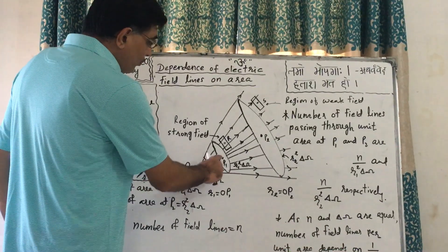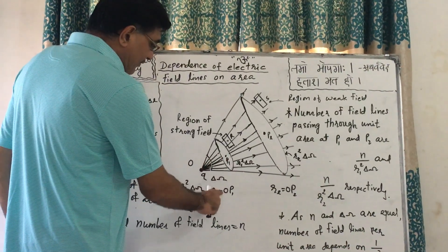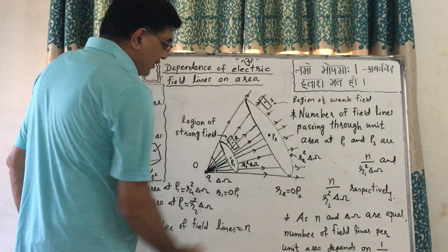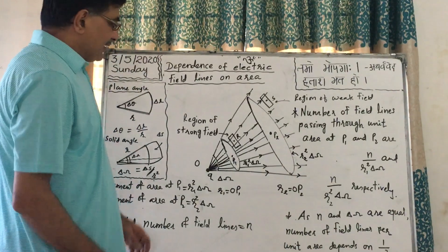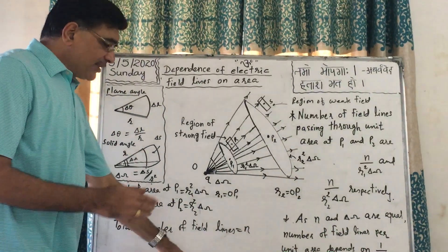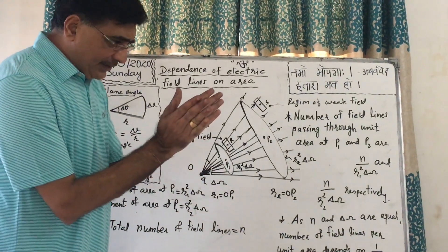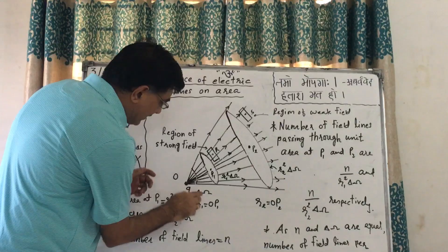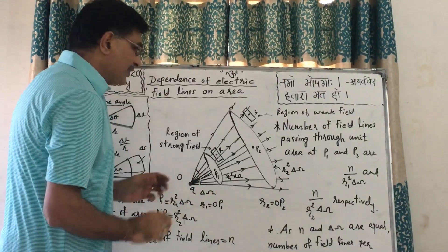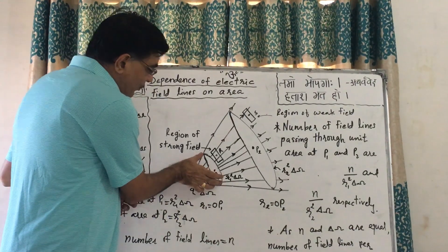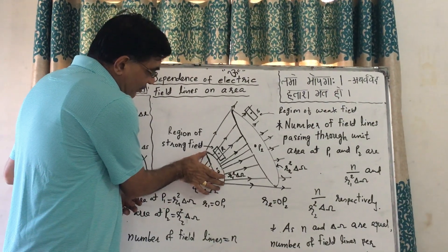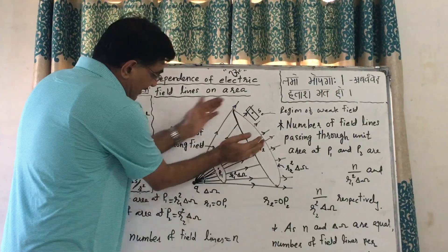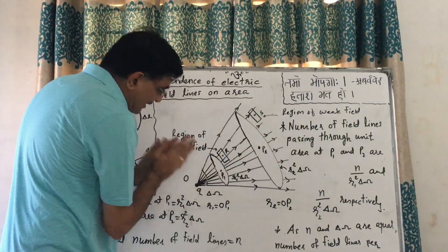The distance from O to P1 is R1 and from O to P2 is R2. The solid angle subtended — delta omega — is the same for the element of area at P1 as well as the element of area at P2.